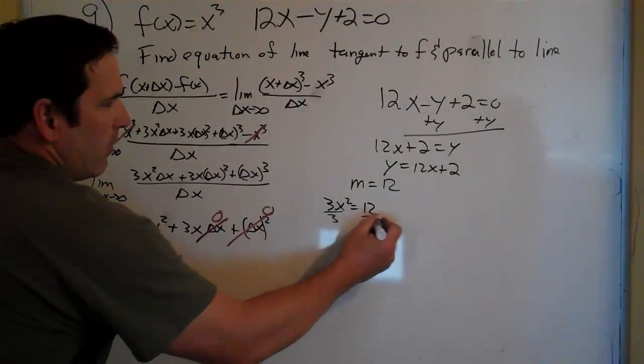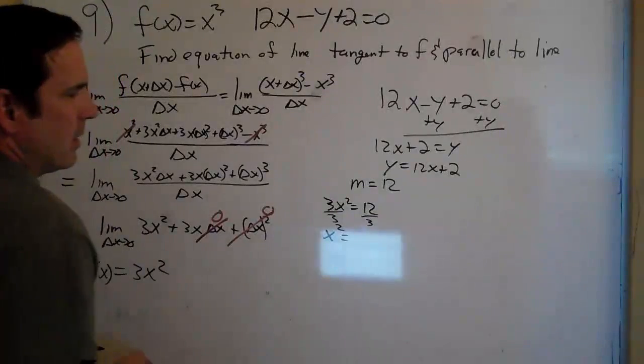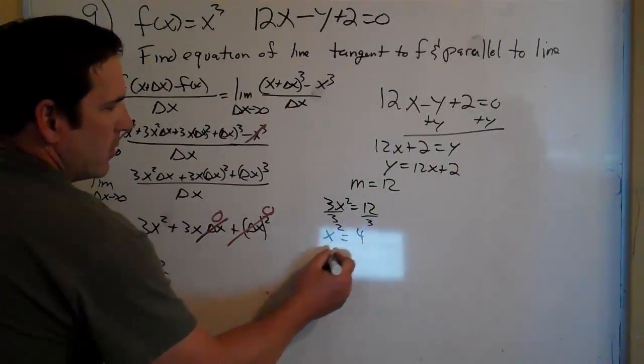Well, divide by 3, divide by 3, x squared equals 4, so x would be 2.